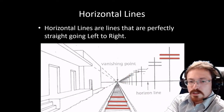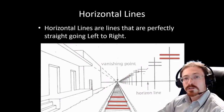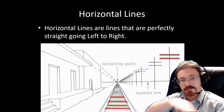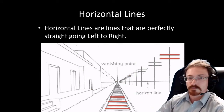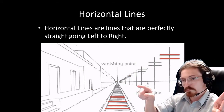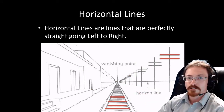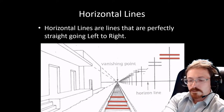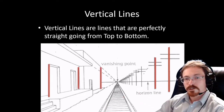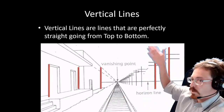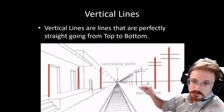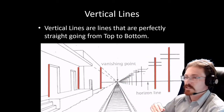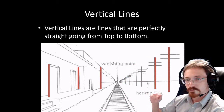Horizontal lines just go left to right — that's it, a straight line left to right. The next thing is vertical lines, which go up and down. Just a straight line up and down — it doesn't curve.